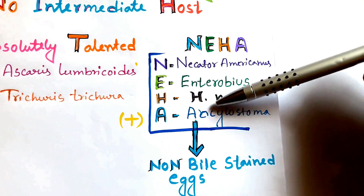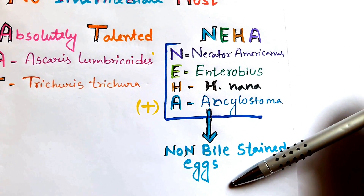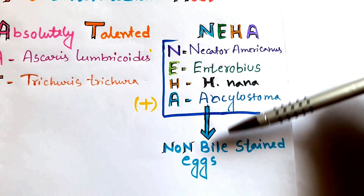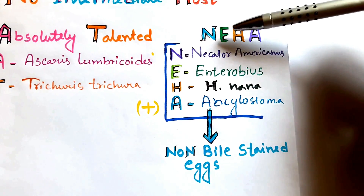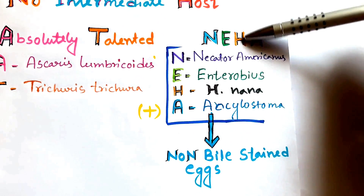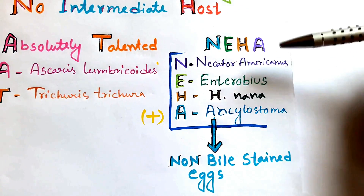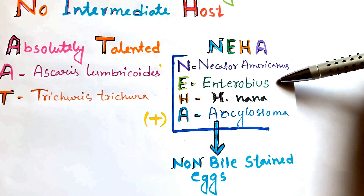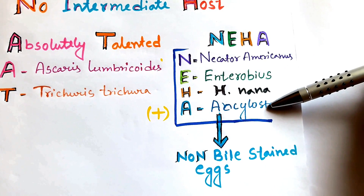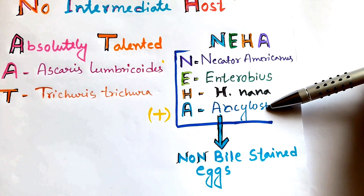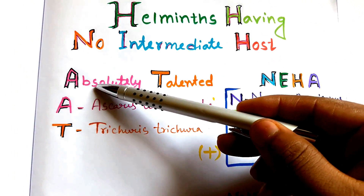In our microbiology classes, we have known the non-bile stained eggs organisms with the mnemonic of NEHA, or 'a hen' — whatever it may be. The organisms are Necator americanus, Enterobius vermicularis, H. nana, and Ankylostoma.